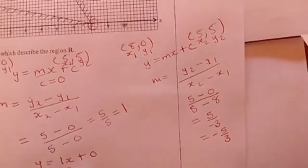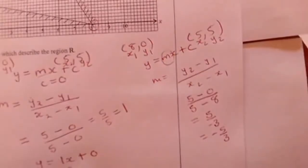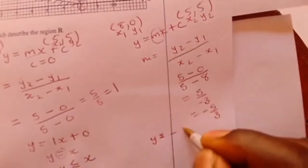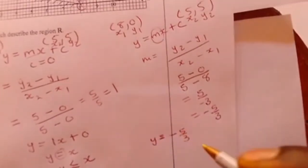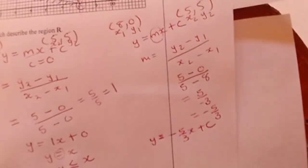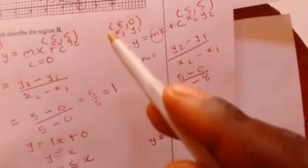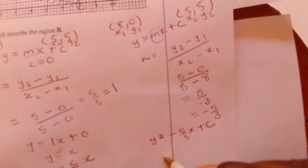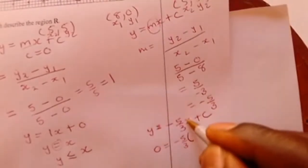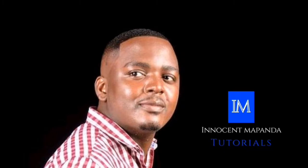Substituting minus 5 over 3 on m, you get y equals minus 5 over 3 x plus c. To find c, we choose the point (8, 0) and substitute 0 on y and 8 on x: 0 equals minus 5 over 3 times 8 plus c.